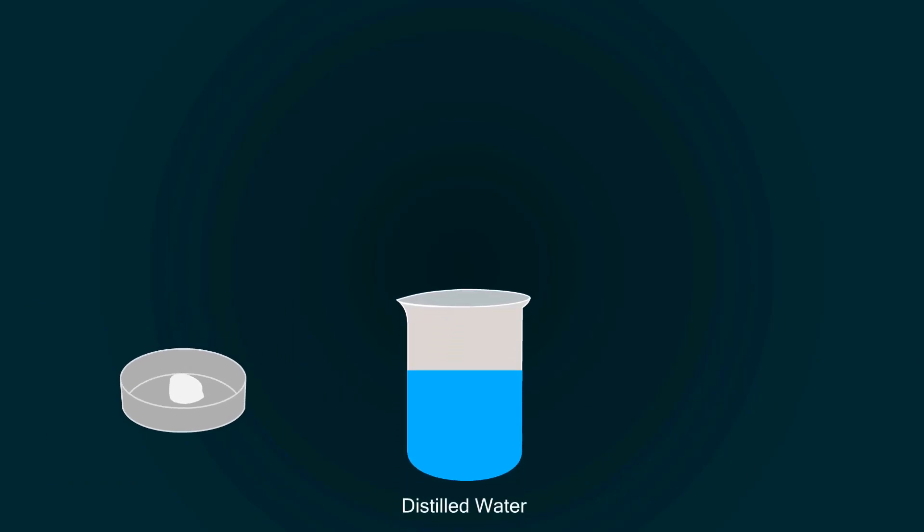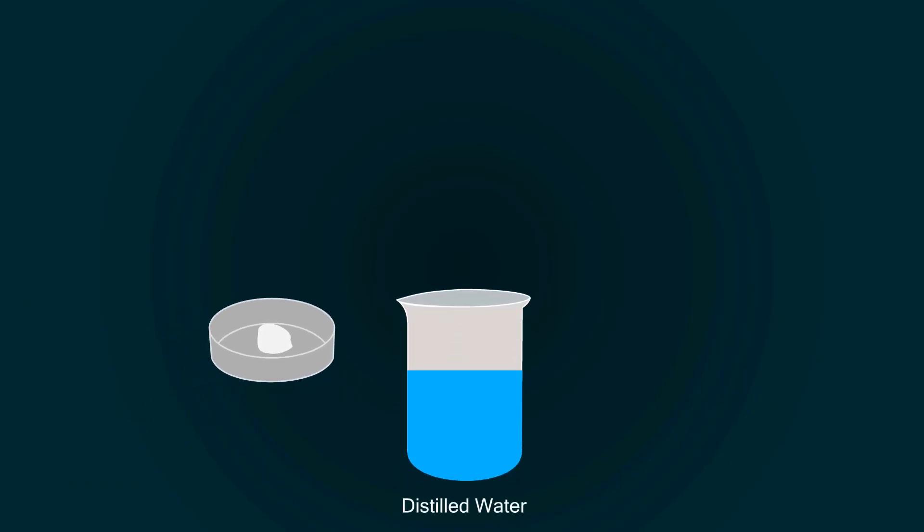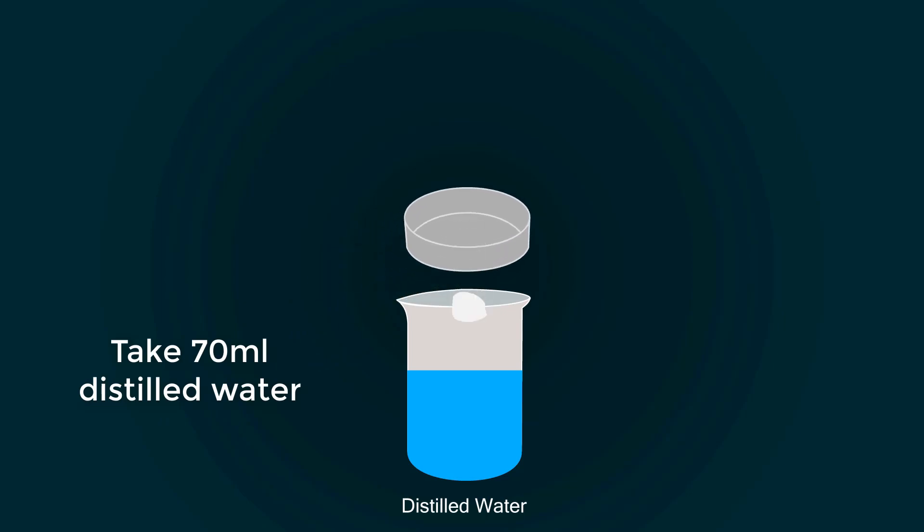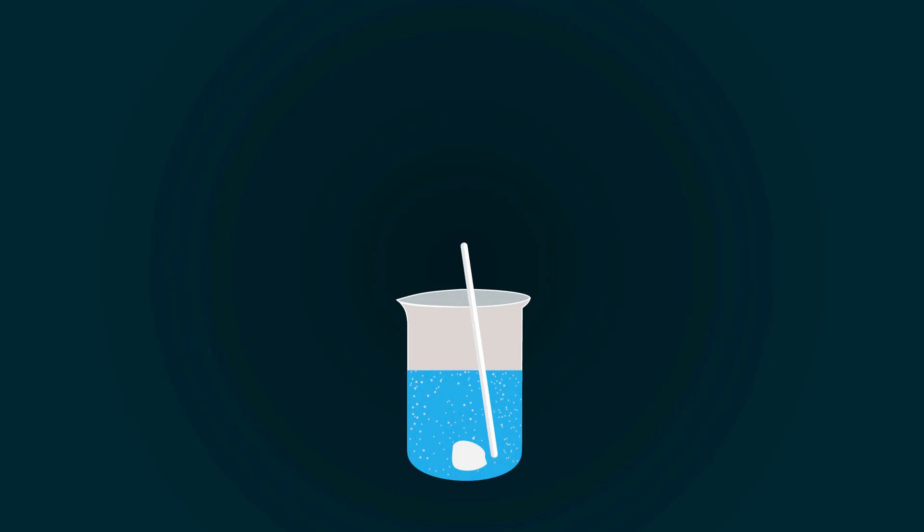Now add the potassium hydroxide into the distilled water. You can take distilled water up to 70 milliliters for mixing. You have to make a homogeneous mixture.